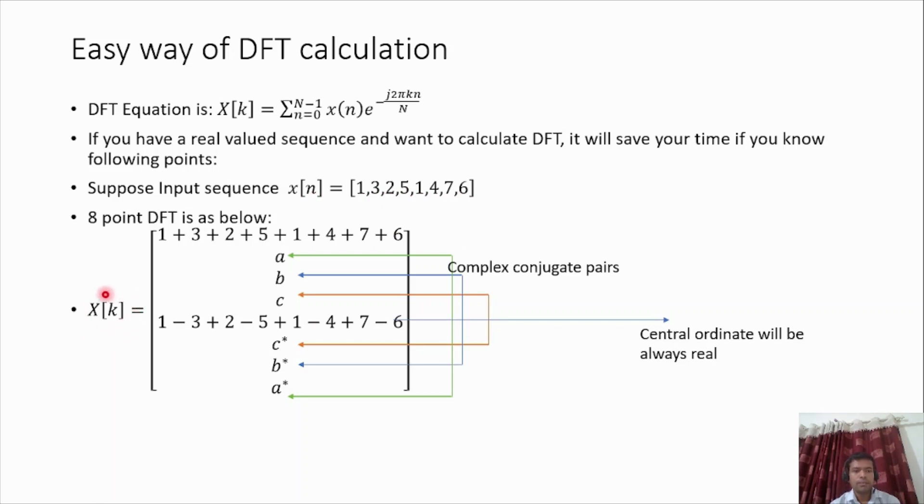The 8-point DFT is represented as X[k]. The X[0], which represents the DC signal, is simply the addition of all elements, or we would say the area under the given time domain signal. This represents the DC component in the given signal.